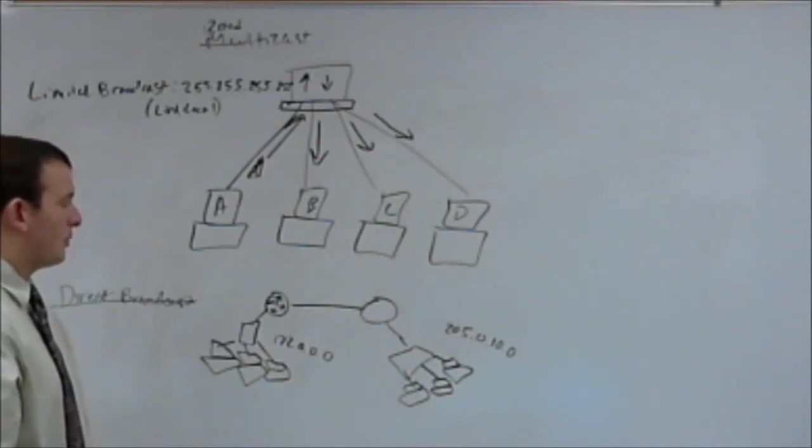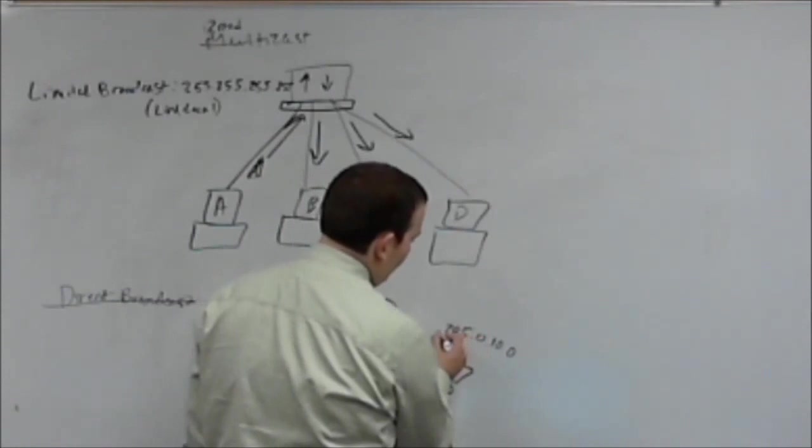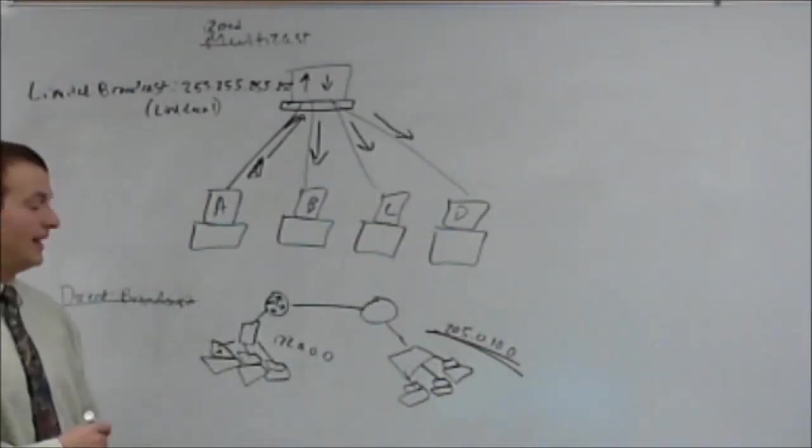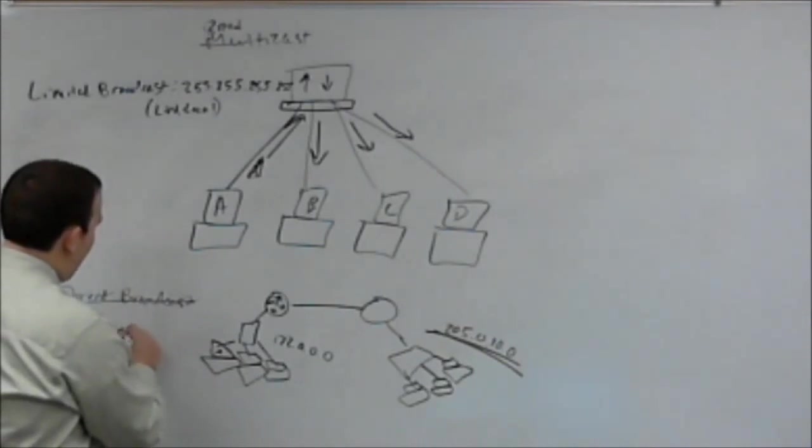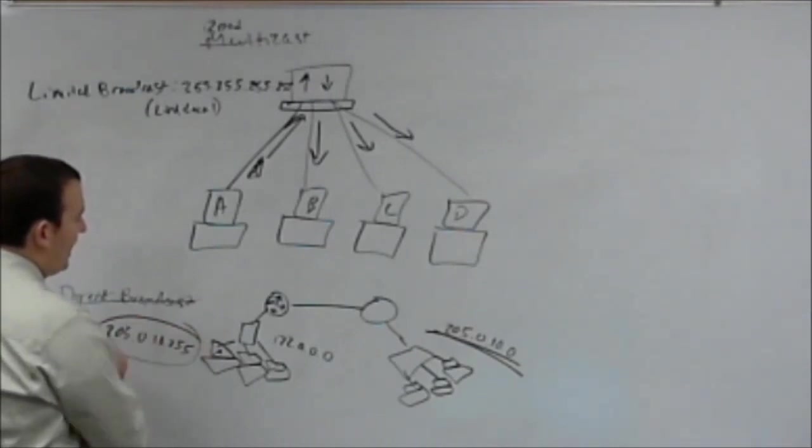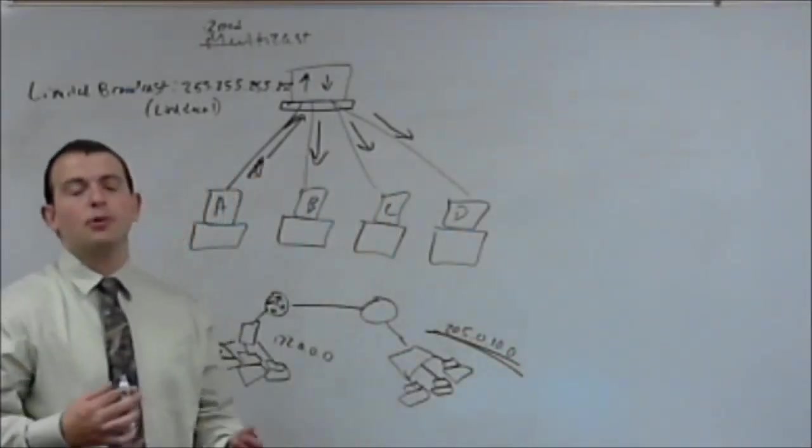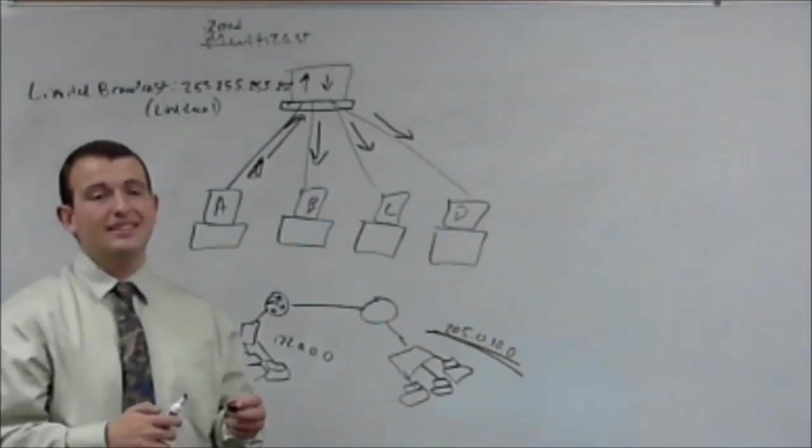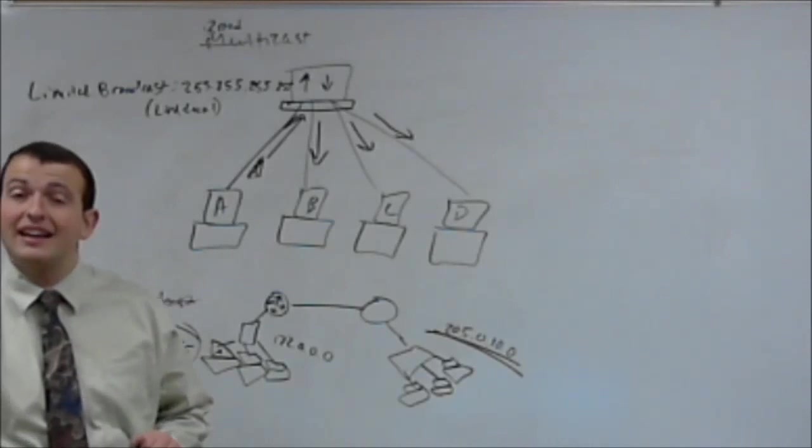So what we need to do is we need to send a broadcast from host A out to all clients on this address. So what you're going to do is you're going to send a direct broadcast. A direct broadcast uses a different address. It is going to use, in this case, 205.0.10.255 as the target address, or you are trying to broadcast to this network. So you use that network's broadcast address. And a direct broadcast is routable, and it can be sent across multiple hops in order to get to the end destination to broadcast a packet out.